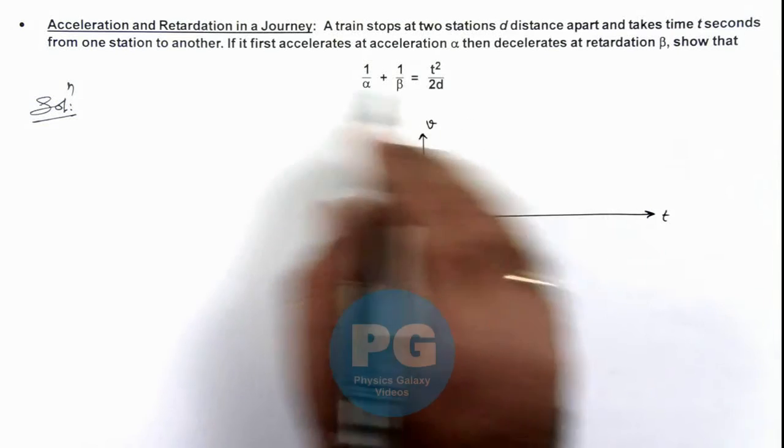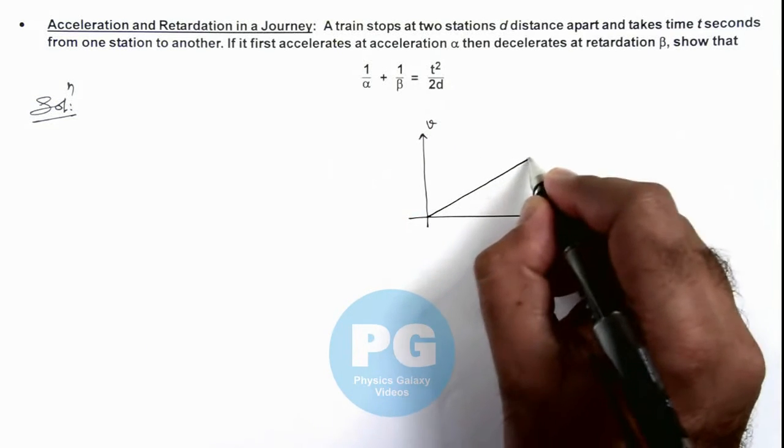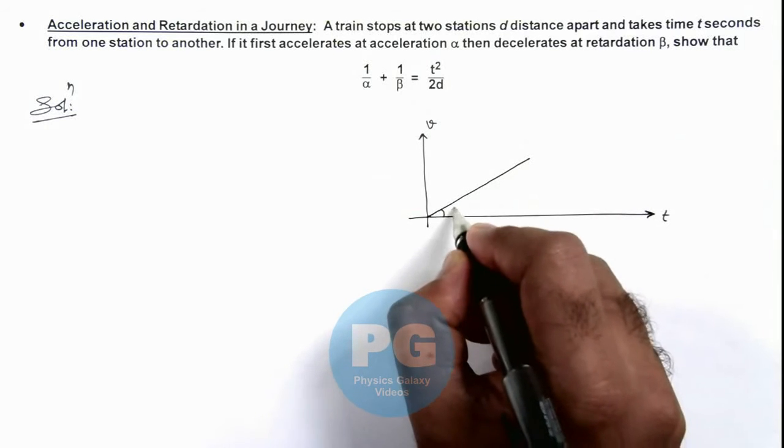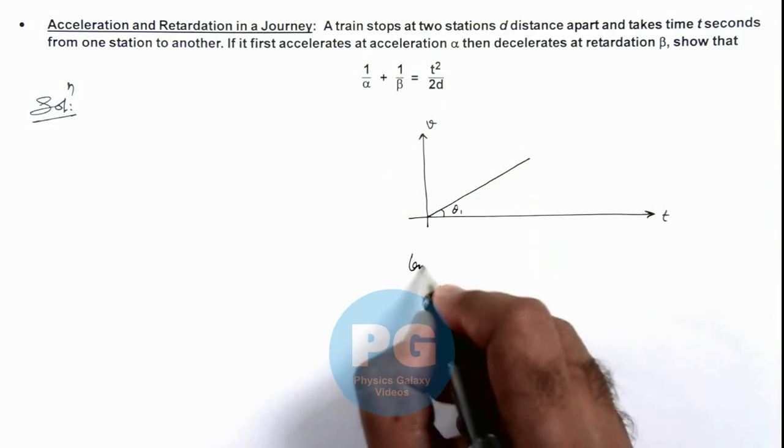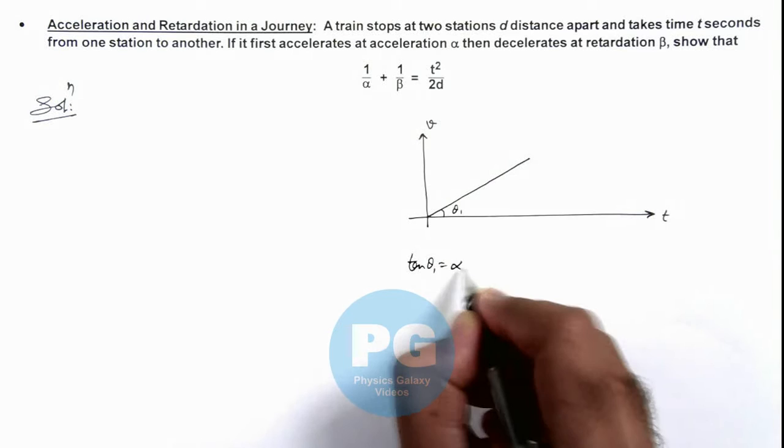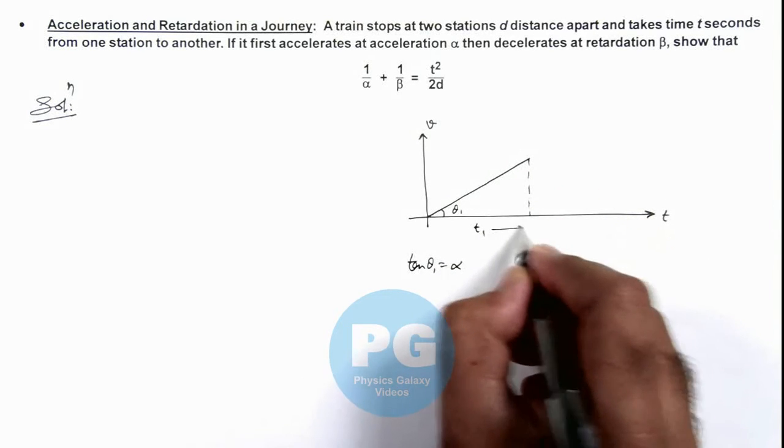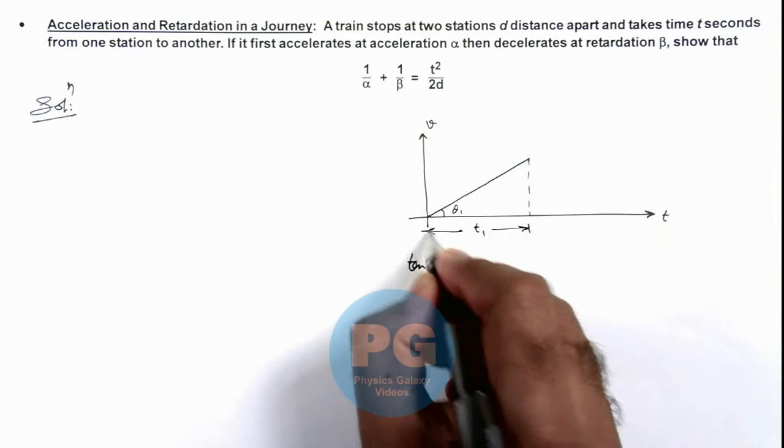We are given that first it accelerates, so the v-t graph will be a straight line. If this angle is θ₁, we can write tan θ₁ equals α. It accelerates up to time t₁.